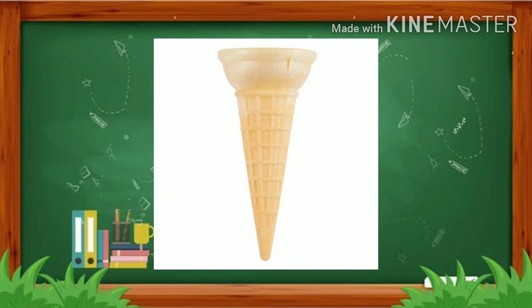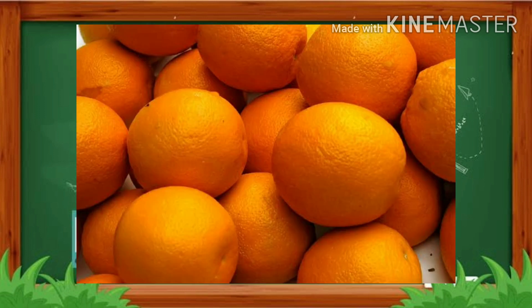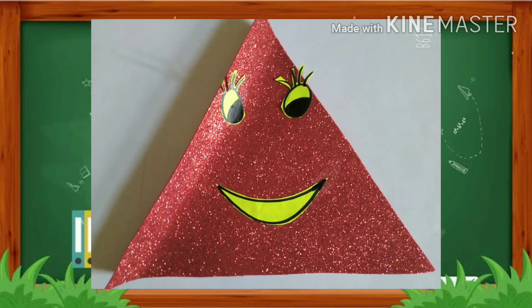What is this? This is the wheel of a bicycle. What is the shape of a wheel? The shape of a wheel is circle in shape. You have already learned this in your previous class. Can you tell me the shape of this fruit? The shape of this fruit is also circle in shape.